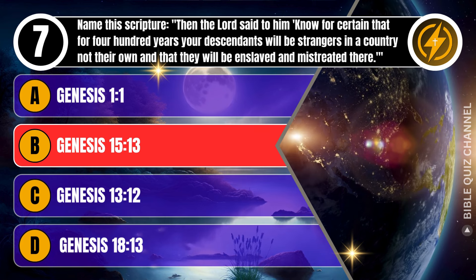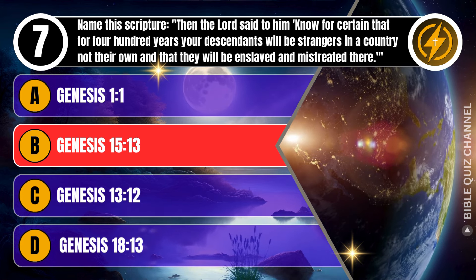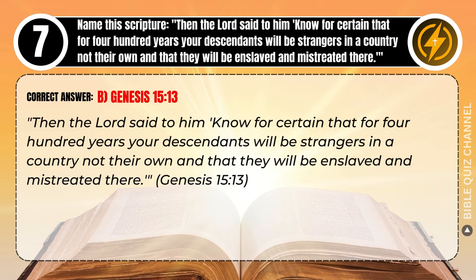Correct answer: B. Genesis, chapter 15, verse 13. Explaining the Bible — Then the Lord said to him, 'Know for certain that for 400 years your descendants will be strangers in a country not their own, and that they will be enslaved and mistreated there.' Genesis, chapter 15, verse 13.